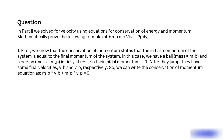Step 1. First, we know that conservation of momentum states that the initial momentum of the system equals the final momentum. Here, a ball of mass mb and a person of mass mp are initially at rest, so their initial momentum is zero. After they jump, they have final velocities vb and vp respectively. We write the conservation of momentum equation as: mb * vb + mp * vp = 0.